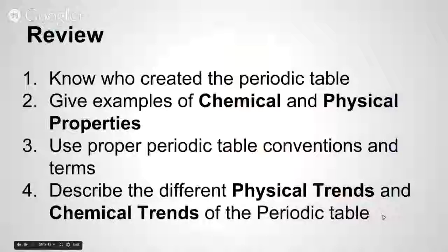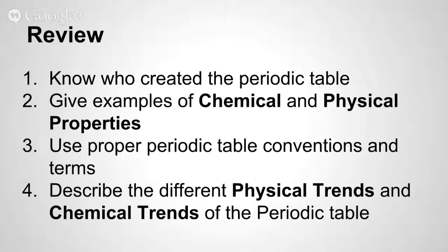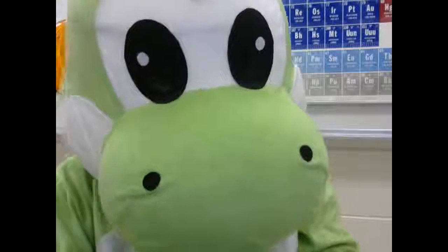So let's end with a review. Number one, you need to know who created the periodic table. Number two, give examples of both chemical and physical properties. Number three, use proper periodic table conventions and terms. And finally, number four, describe the different physical trends and chemical trends of the periodic table. Thanks for staying with me, guys. See you next time. We're out!